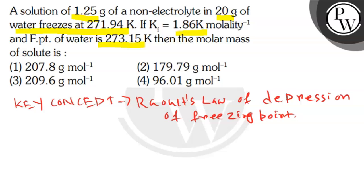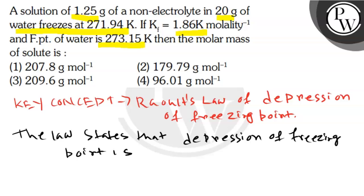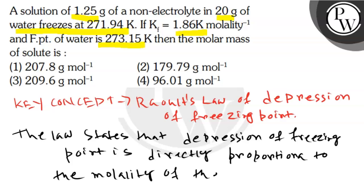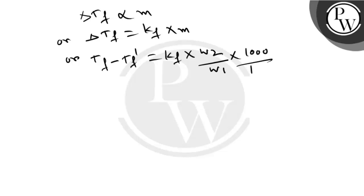And what is the law? The law states that the depression of freezing point is directly proportional to the molality of the solution. So delta Tf varies as M, or delta Tf is equal to Kf into M. Delta Tf can be written as Tf minus Tf dash is equal to Kf into M, and M can be written as W2 by W1 into 1000 by M2.